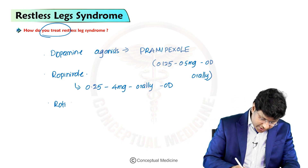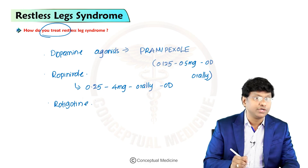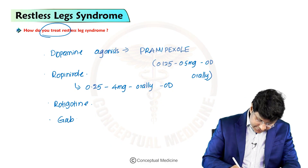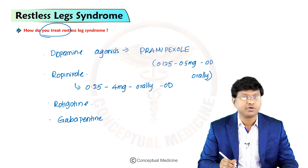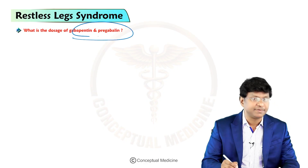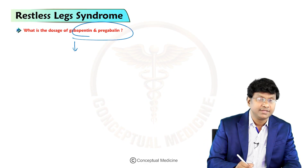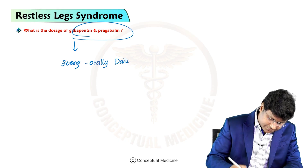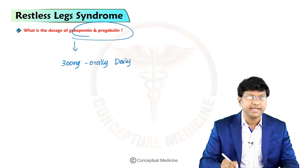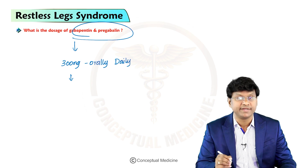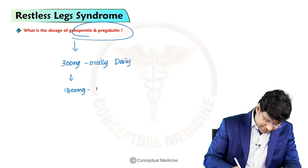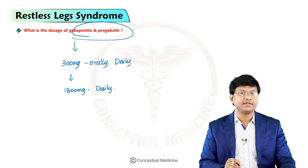Another important drug is rotigotine, which can also be given in the treatment of Restless Leg Syndrome. We also have gabapentin — you should start with 300 milligrams orally daily, and you can increase the dose up to a maximum of 1800 milligrams daily, depending upon the response and tolerance of the individual.